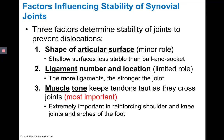Our next topic is going to be the factors that influence stability of synovial joints. There are three factors: the shape of articular surfaces, ligaments — their number and location — and muscle tone. Muscle tone is going to be the most important factor, whereas ligaments and the shape of the articular surfaces play a limited and minor role respectively.